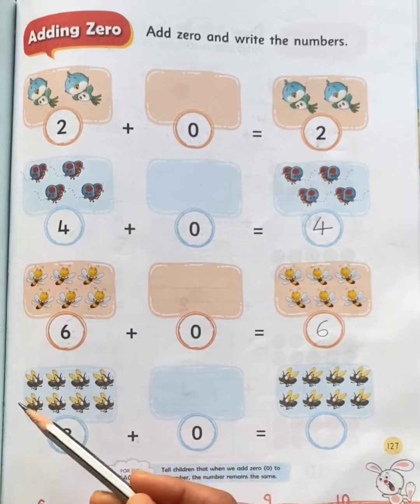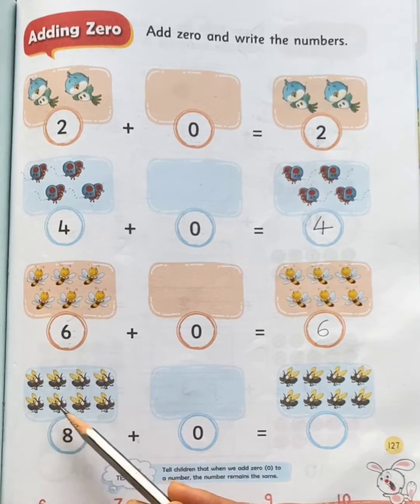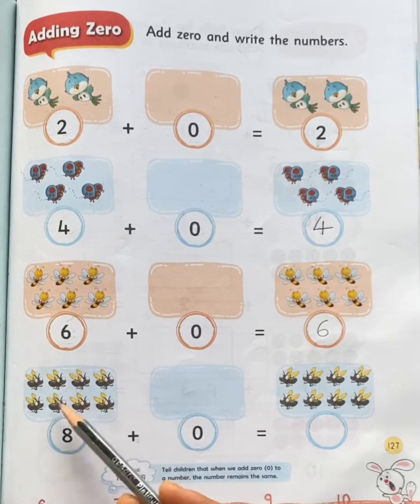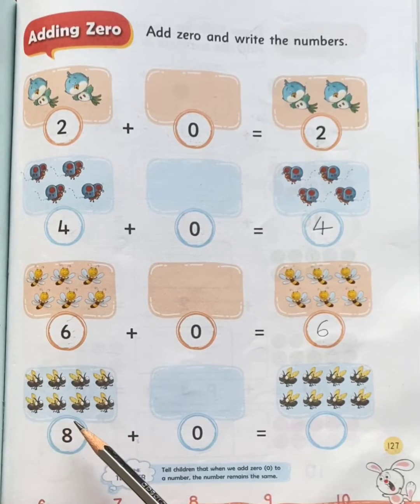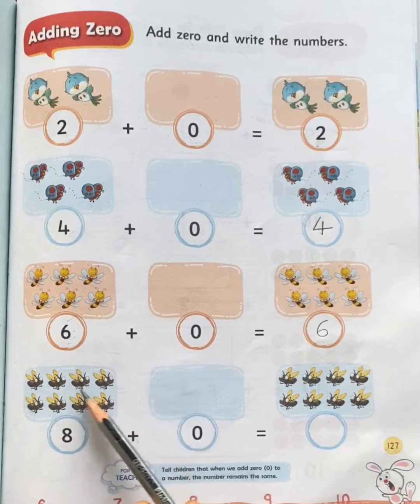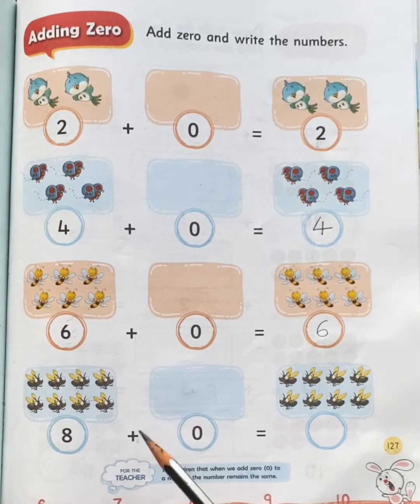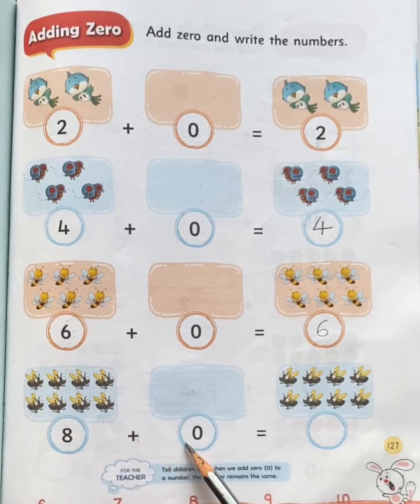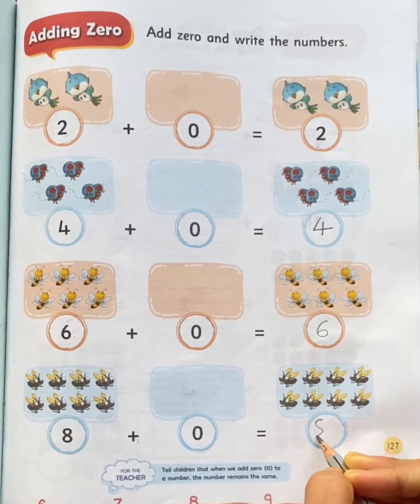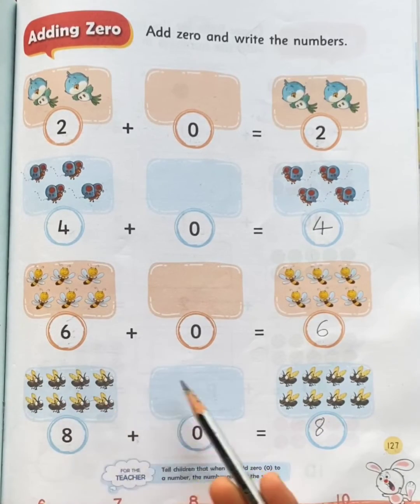Here in the first set you can see one, two, three, four, five, six, seven, eight, eight flies. And in the second set you can see zero flies. So how many flies are there in both the sets in all? Yes, eight. So here eight plus zero is equal to eight. Thus, eight flies are there in all.